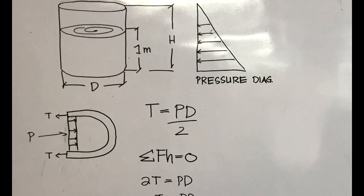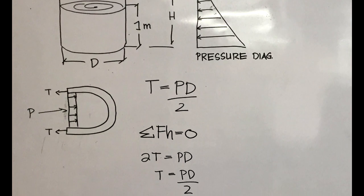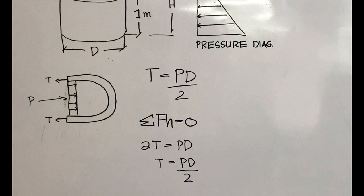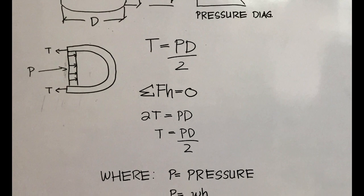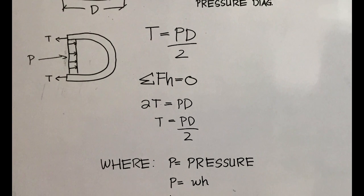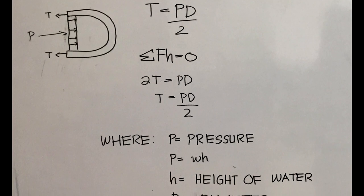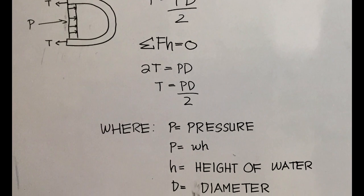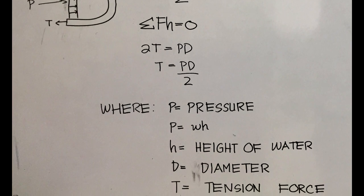Considering this figure, we can see that T and D are acting on different directions. Summation of horizontal forces equals zero, where 2T equals PD. Simplifying terms, T equals PD over 2, where P equals pressure or unit weight times height, h equals height of water, D equals diameter, and T equals tension force.